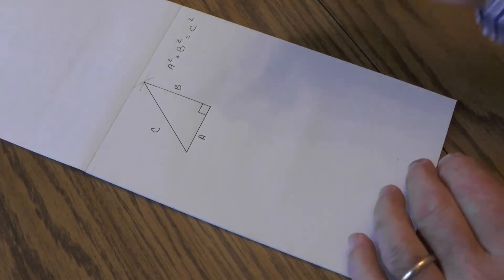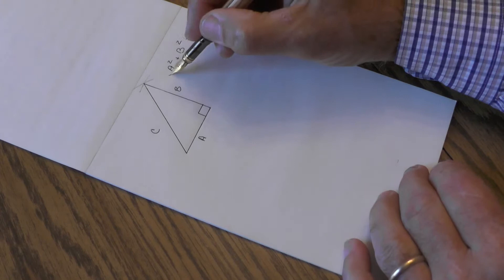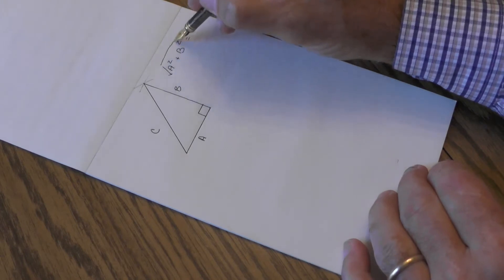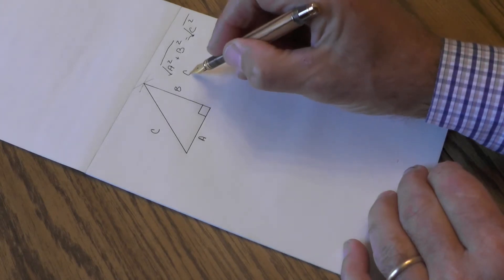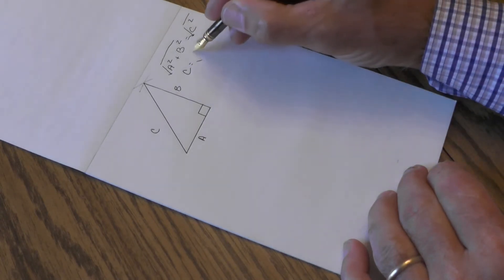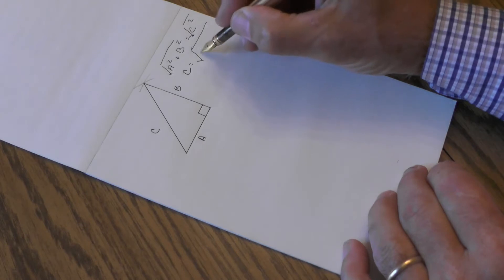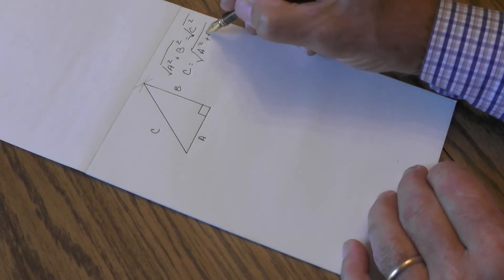So the relationship there is that you can take the square root of both sides and solve for C, and C would be equal to the square root of A squared plus B squared.